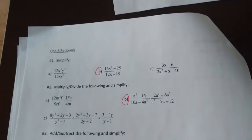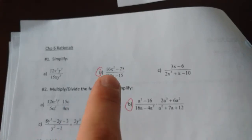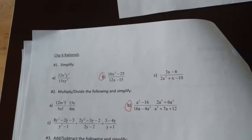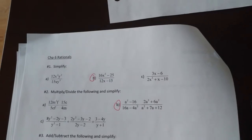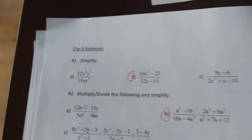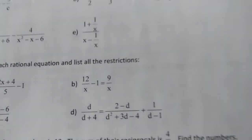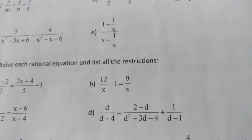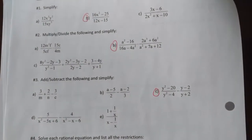Just a quick disclaimer: usually when we simplify something like this, we like to state our NPVs — in other words, our non-permissible values. It's good practice to always do this, but I didn't list them here because it says just simplify. Still, it should be something you do anyway. Since it doesn't say to do so until question number 4, I'm just going to glance over it for now.